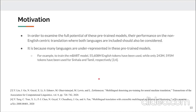Some studies consider non-English-centric fine-tuning where only one language pair is included in the pre-trained model. Our motivation is to examine the full potential of this pre-trained model by considering non-English-centric translation where both languages are included. This is mainly because many languages are underrepresented — for example, 55,000 million English tokens were used to train MBART, while only 243 million tokens for Sinhala and 595 million tokens for Tamil were used.